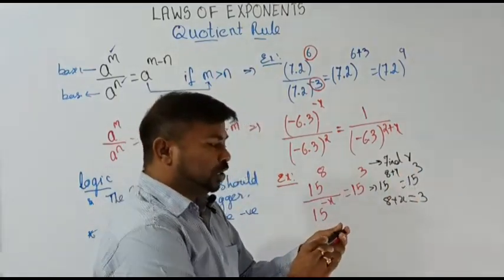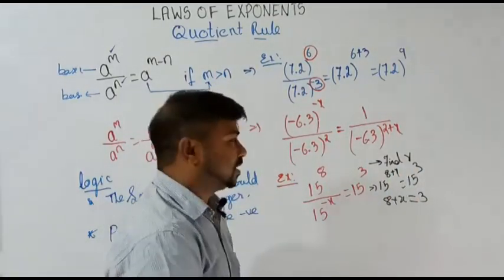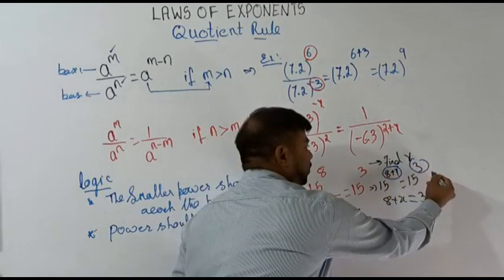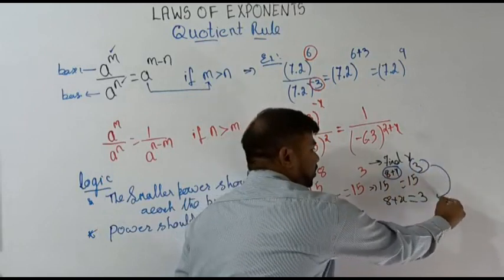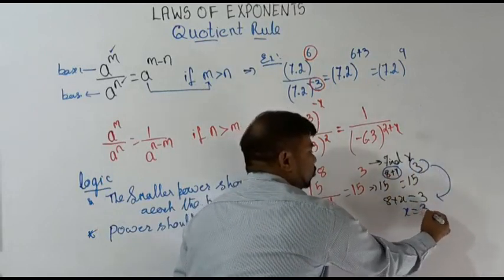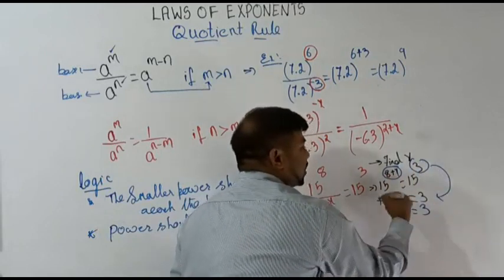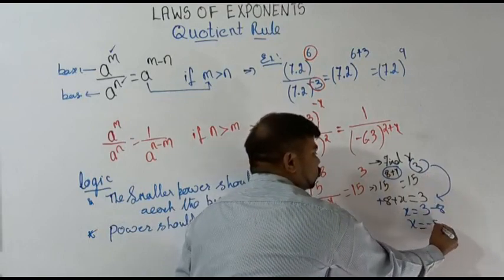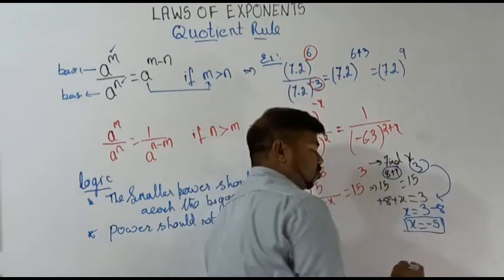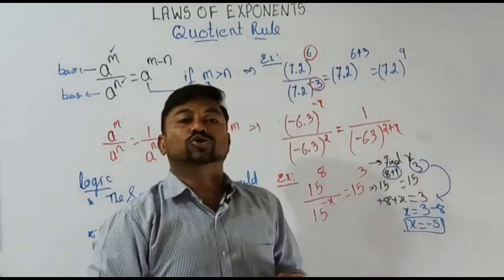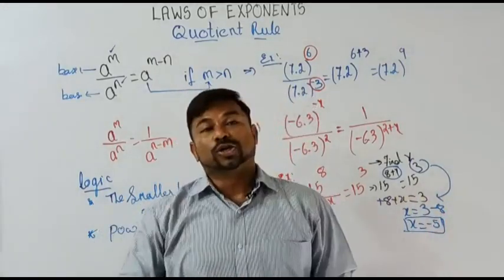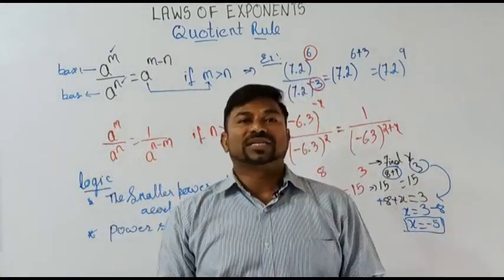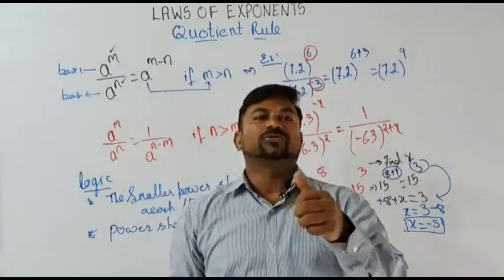No need to write the base again — this power equals this power. So 8 plus x equals 3, which means x equals 3 minus 8, so x equals minus 5. This is how we find the value of the variable using the quotient rule.